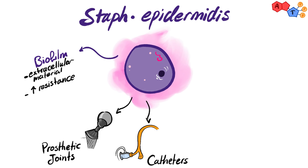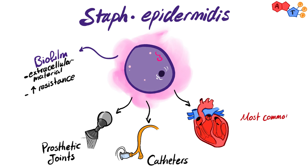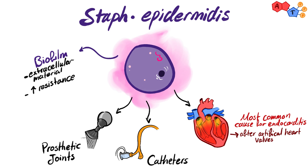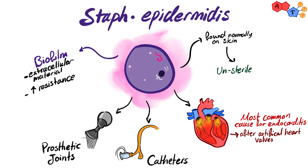Interestingly, staph epidermidis is the most common cause of endocarditis after artificial heart valve surgery. Along with staph aureus, staph epidermidis is normally present on our skin, and that's why penetrating the skin with unsterile tools can result in serious problems.